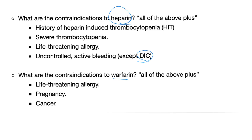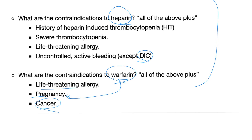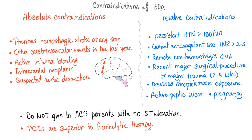Contraindications to warfarin include all of the above, plus life-threatening allergy to warfarin, pregnancy — because warfarin is teratogenic — and cancer. We do not prefer warfarin for cancer patients. If you need to anticoagulate a cancer patient, use low molecular weight heparin. Contraindications to TPA include absolute and relative contraindications; TPA is a fibrinolytic, not an anticoagulant.